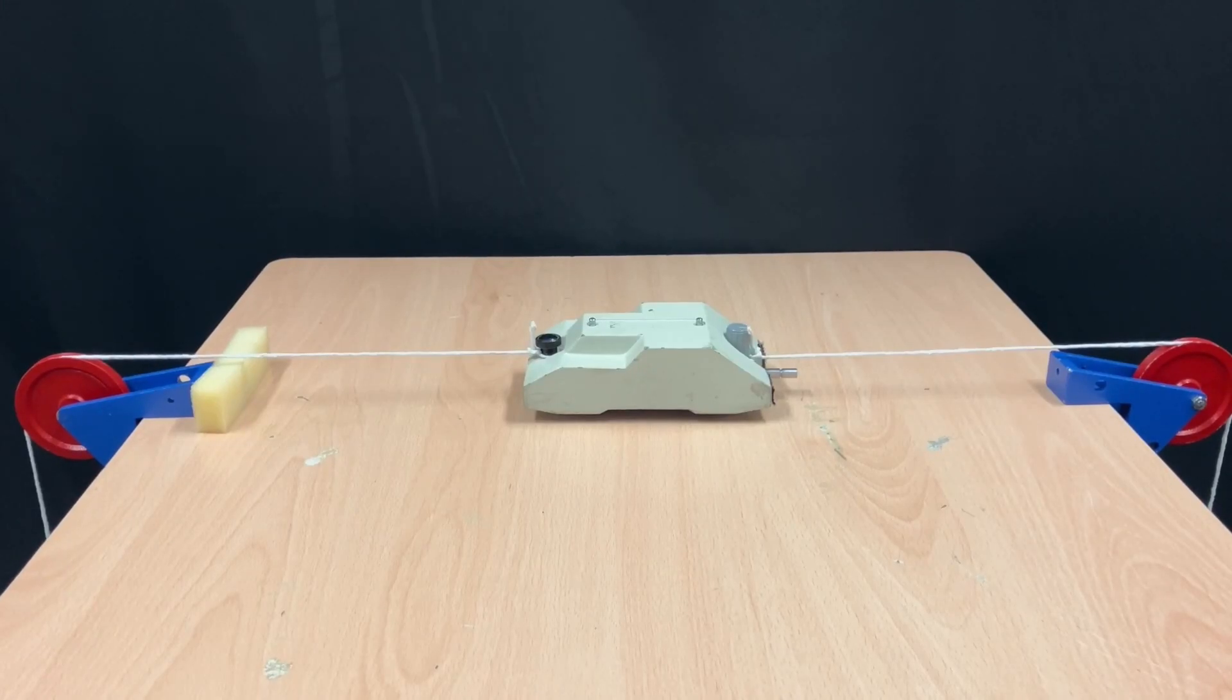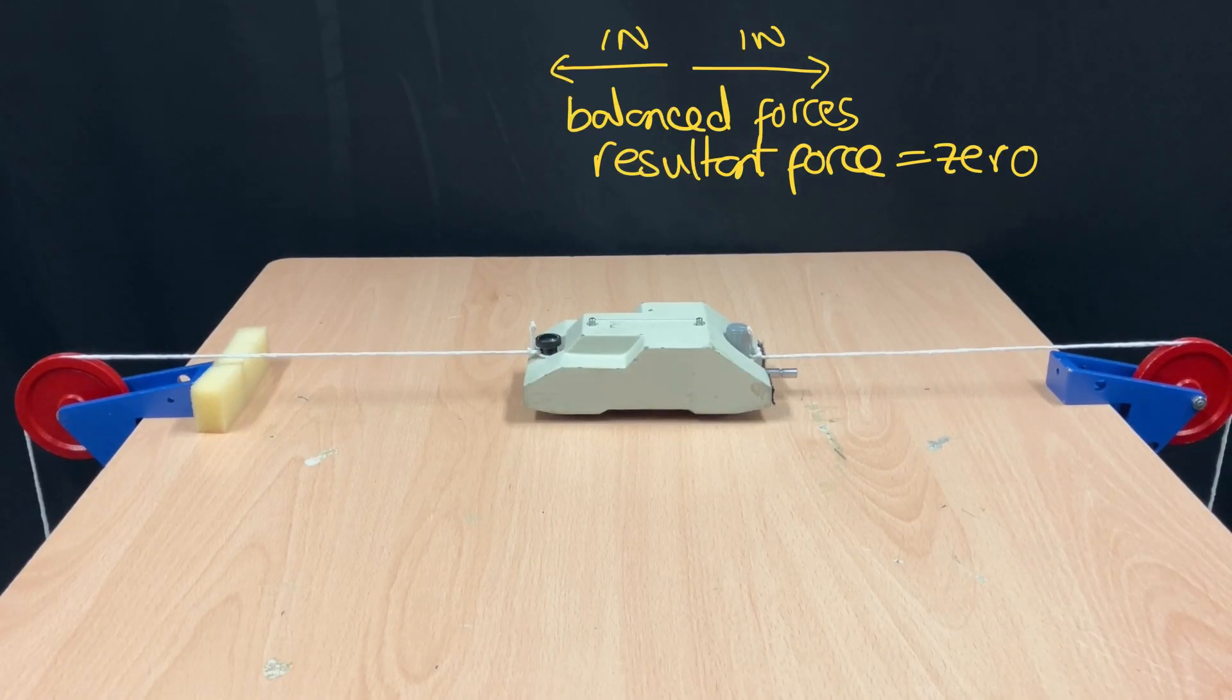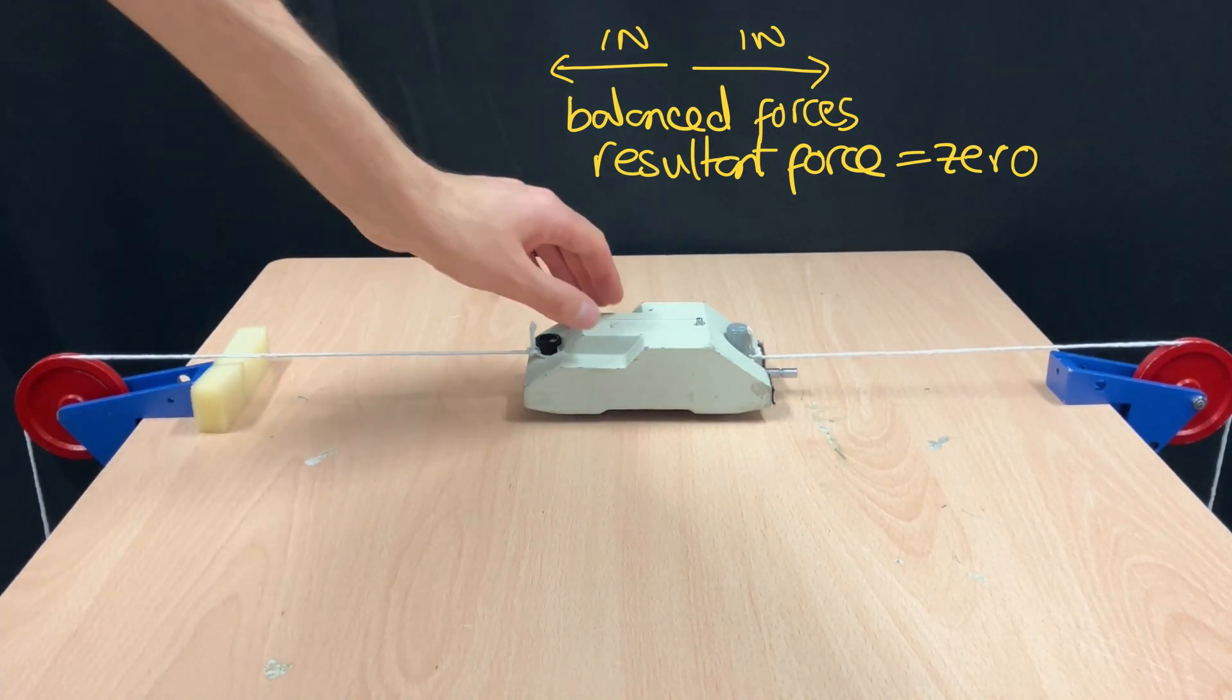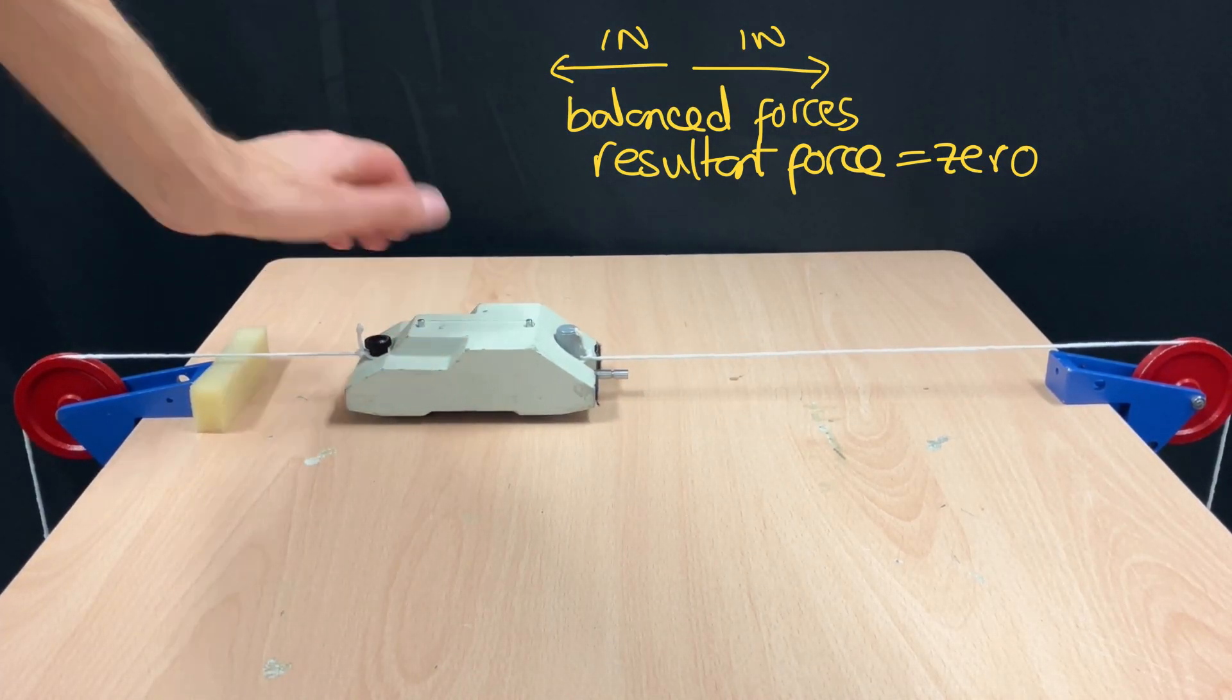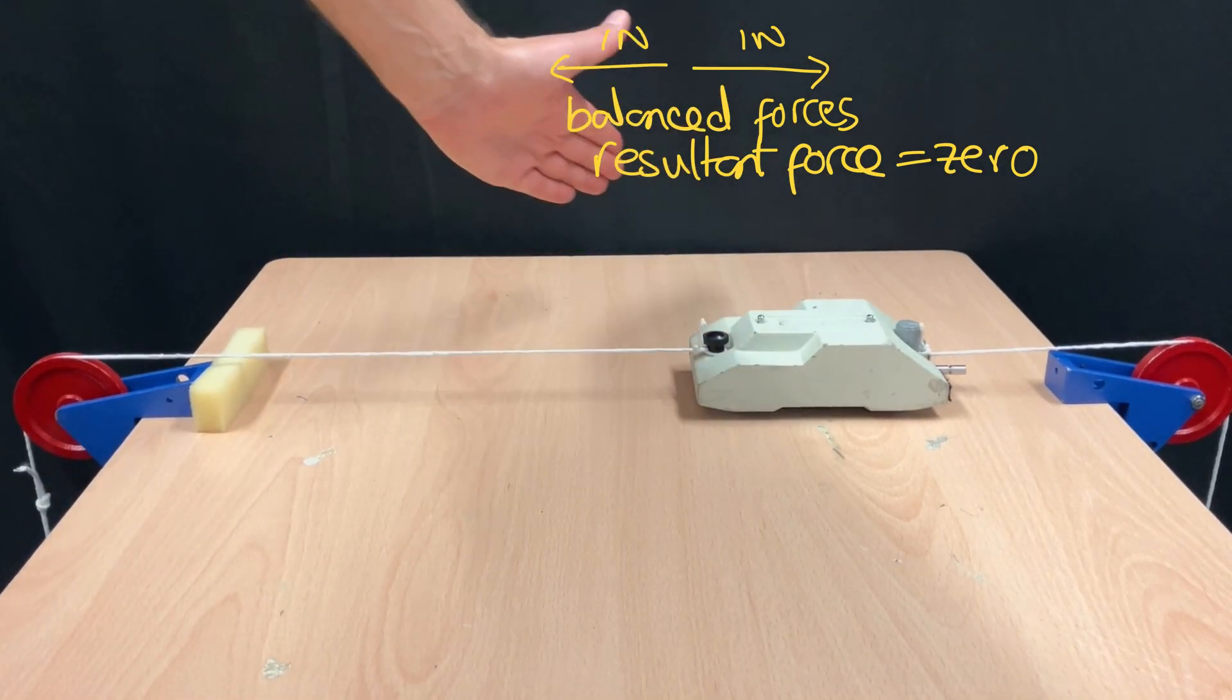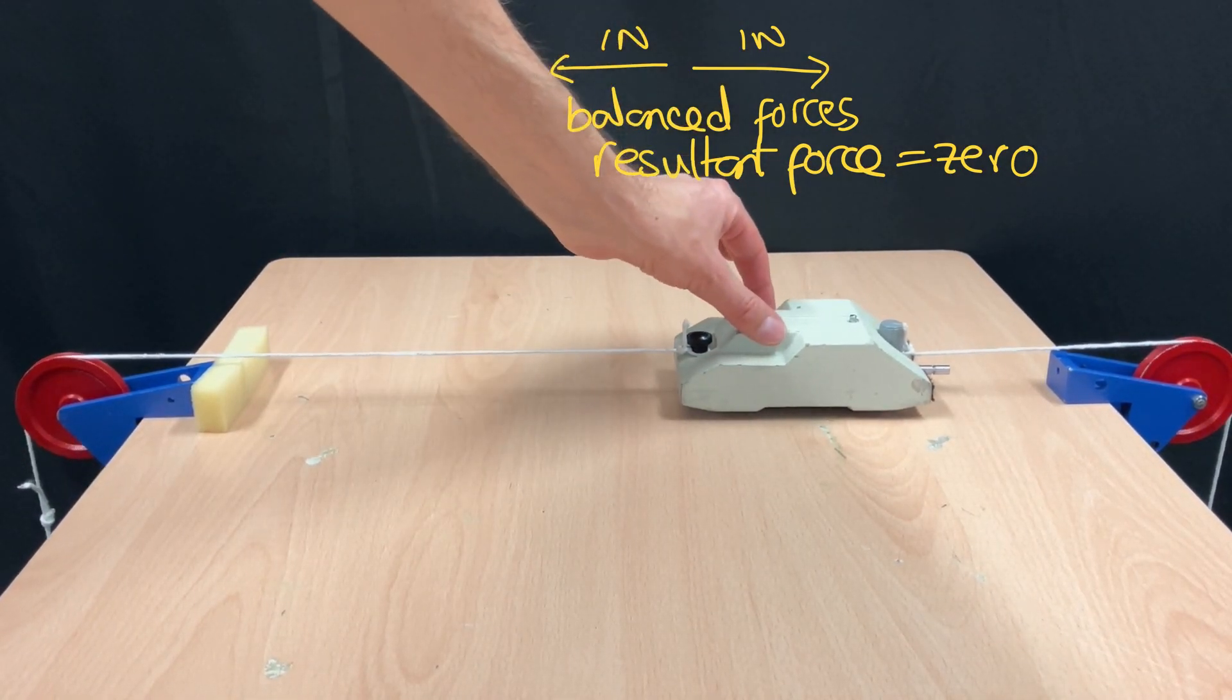This is a nice demonstration to use when introducing balanced and unbalanced forces or resultant force. Currently I have one newton on each end of the string, which means the forces are balanced or the resultant force is zero, so the trolley is in equilibrium.